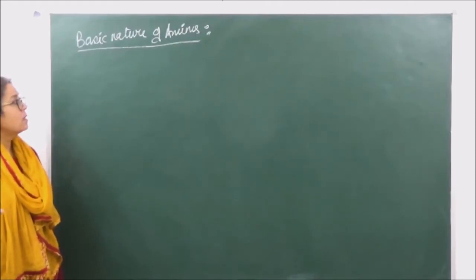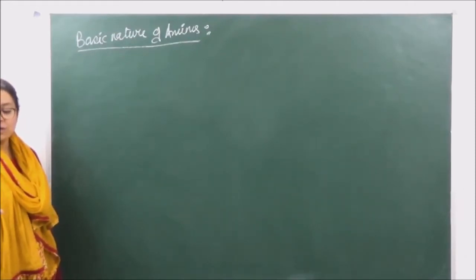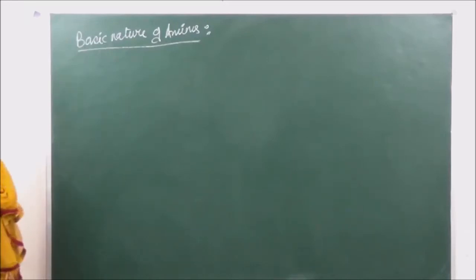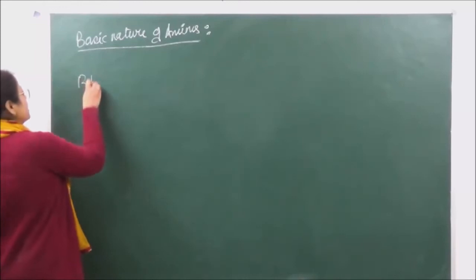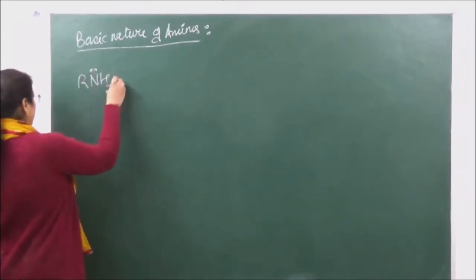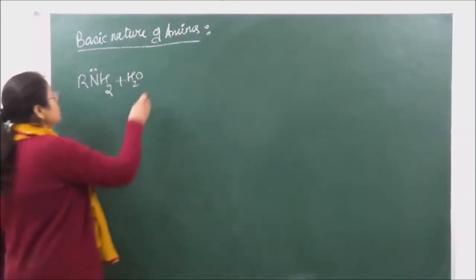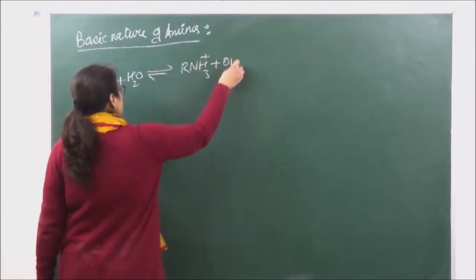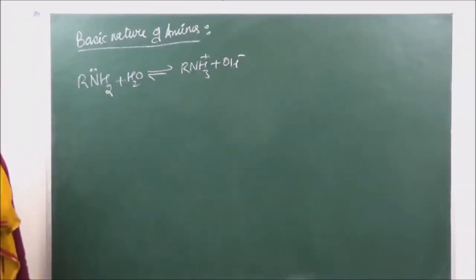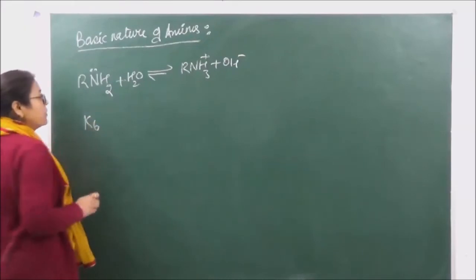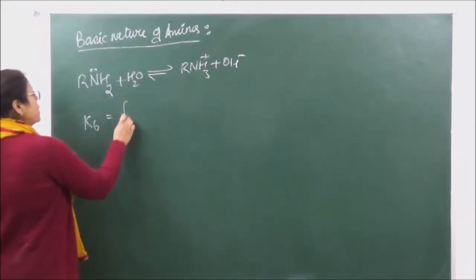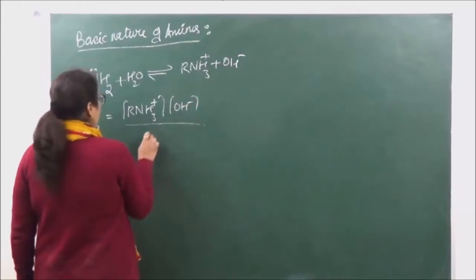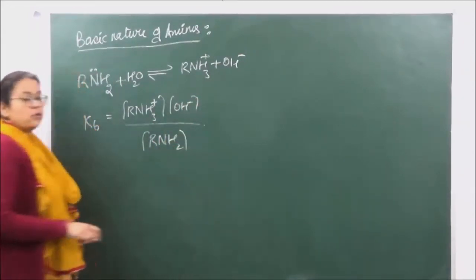Amines are also going to behave as Lewis bases. The amines are going to be weak bases, as they react with water to give us hydroxyl ions. When we look at the reaction, an amine reacting with water gives us R-NH3 positive plus OH negative. Applying the law of mass action, Kb for the reaction is going to be concentration of R-NH3 positive into concentration of OH negative upon concentration of R-NH2. That is going to be the value of Kb.